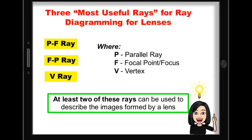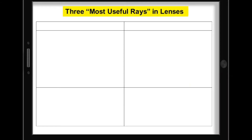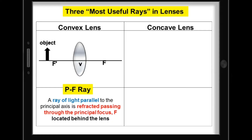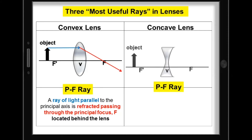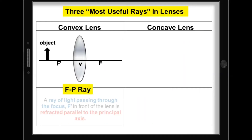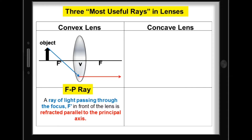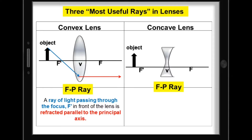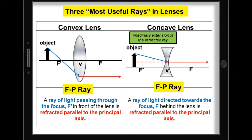Remember that at least two of these rays can be used to describe the images formed by a lens. For the PF ray for convex lens, a ray of light parallel to the principal axis is refracted passing through the principal focus located behind the lens. For the PF ray for concave lens, a ray of light parallel to the principal axis is refracted as if passing through the principal focus located in front of the lens — notice that the refracted ray is extended in front of the lens. To draw the FP ray for convex lens, a ray of light passing through the focus in front of the lens is refracted parallel to the principal axis. For concave lens, the FP ray is a ray of light directed towards the focus behind the lens, refracted parallel to the principal axis, with the refracted ray extended in front of the lens.